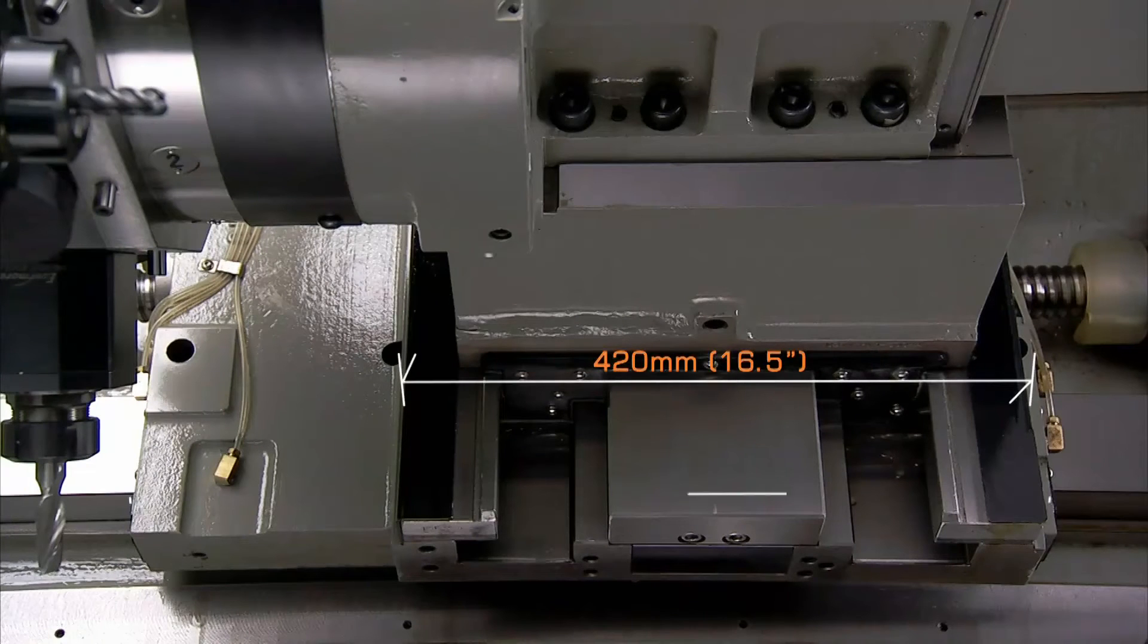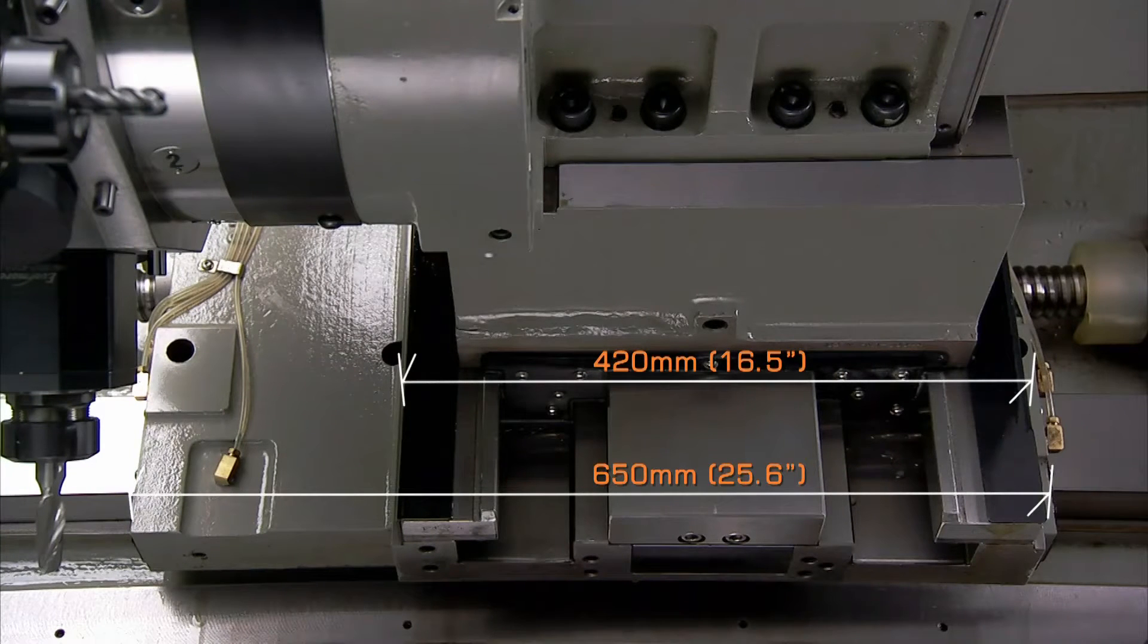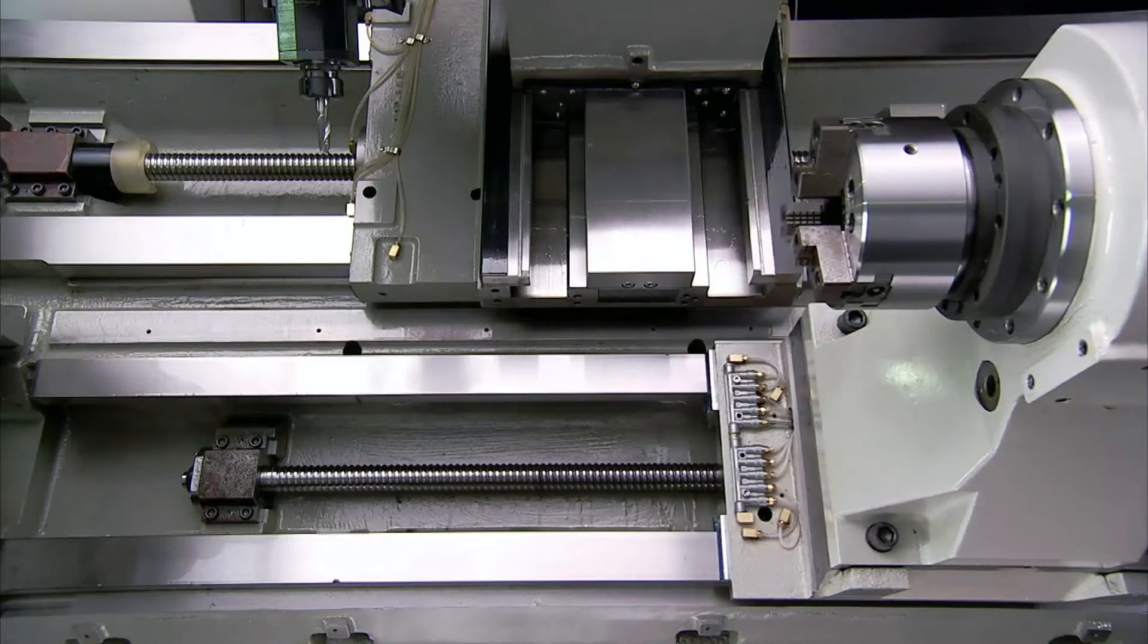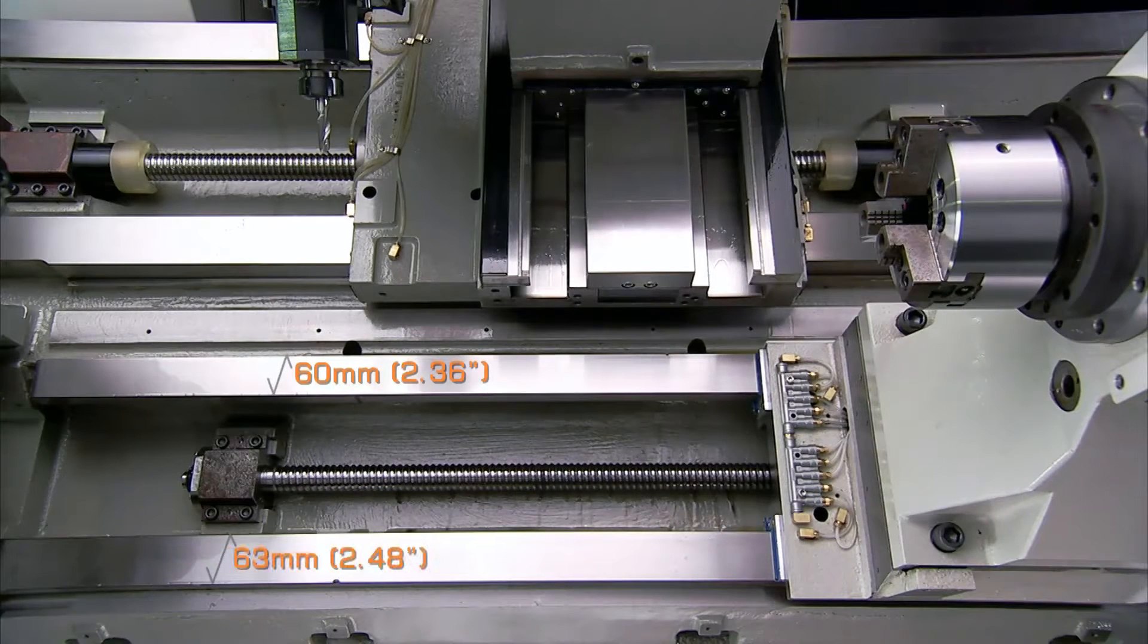Wider and stronger box guideway and hand-scraped wedge structure maintains trapped film of oil between slideway and undercarriage for smooth and even travel.